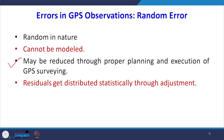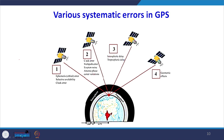For random error, whose nature is not known to us and cannot be modeled, we can reduce the magnitude through proper planning and executing the GPS surveying method. We can use statistical methods to distribute the error amongst all observations so that it is not concentrated in one particular location.